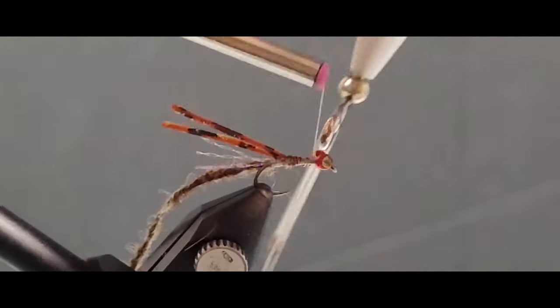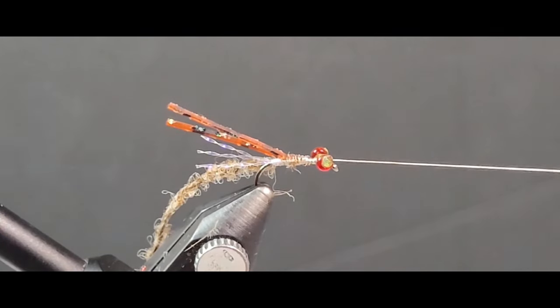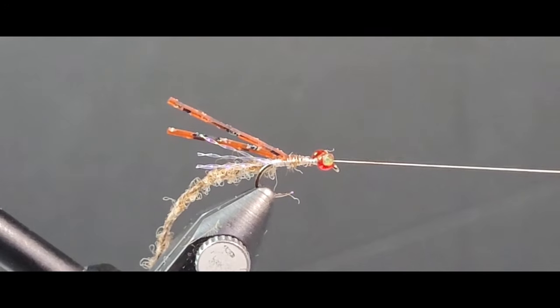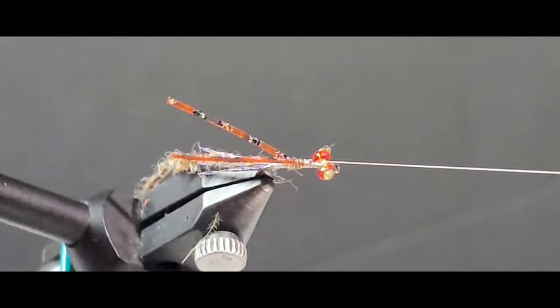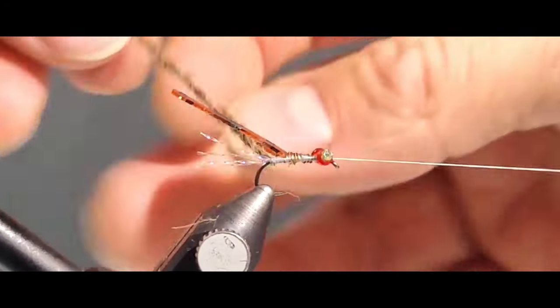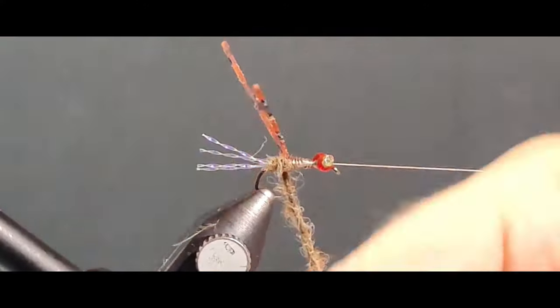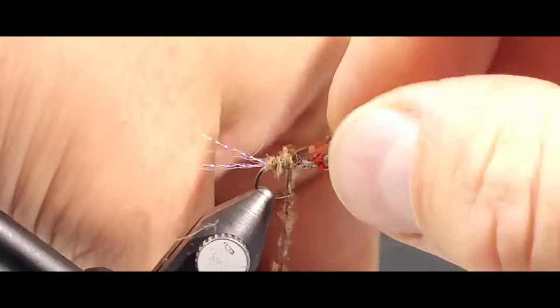That's perfect. I'm going to do a whip finish just to get that out of the way. Then here we're going to go ahead and wrap the body up with that poly yarn. Want to make sure to get those legs out of the way.